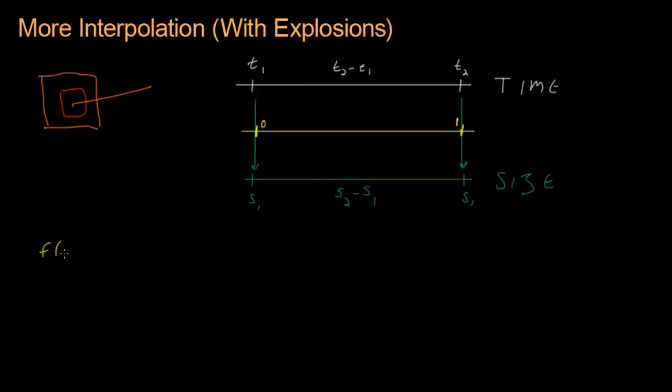So let's first start out with getting T1 to T2 and transferring it to go from 0 to 1. I'm going to make a function for that, F of X. And it's really simple. We just take X and we subtract T1. That means when X is the same as T1, this will all turn out to be 0.